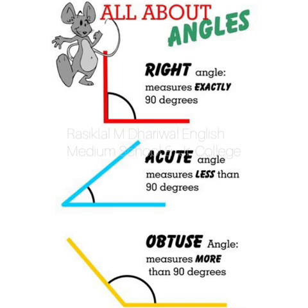Now just look at the third one — obtuse angle. It is in yellow color and it is more than 90 degrees. Right angle is exactly 90 degrees, that is in red. So obtuse angle is more than 90 degrees — woh 90 degrees se zyada hota hai, bahar ki taraf nikla hota hai. So it is obtuse angle. These are the three types of angles.